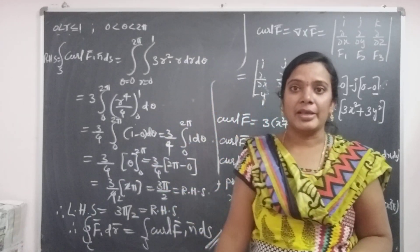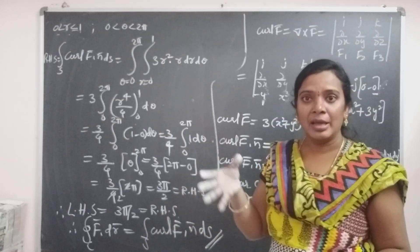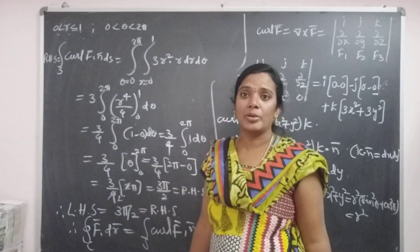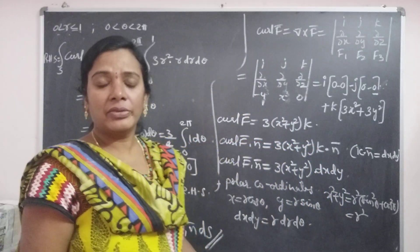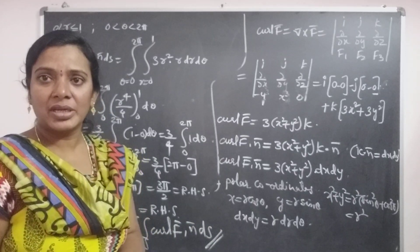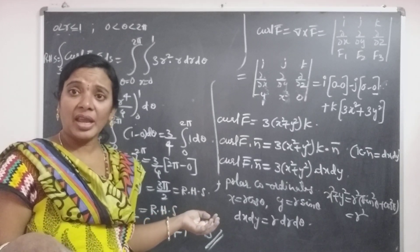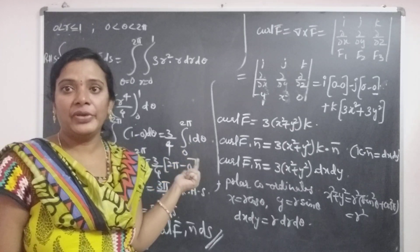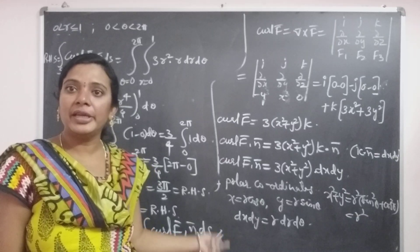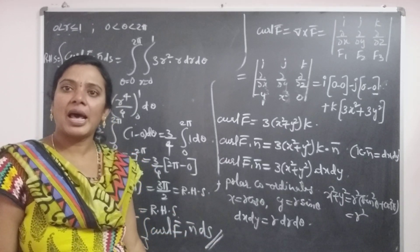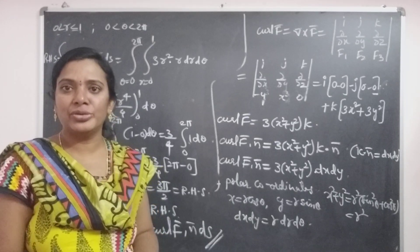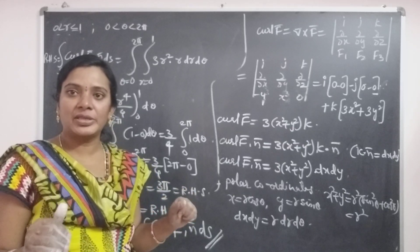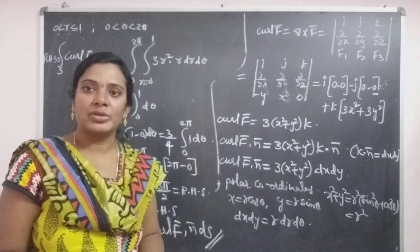In summary: the vector F is a differentiable vector point function. We compare it with the general form and differentiate. Since the region is a circular disk, we use polar coordinates with radius equal to 1. For the line integral F · dr, we use x = cos θ, y = sin θ along the simple closed curve. For the surface integral we use x = r cos θ, y = r sin θ, with dx dy = r dr dθ. The key is knowing the statement of Stokes' theorem and its Cartesian form. Thank you.